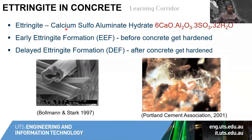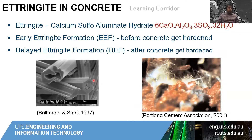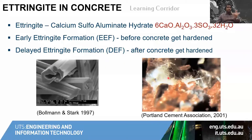Ettringite is technically calcium sulfo-aluminate hydrate and has this complex formula here. It basically appears as needle-like structures in concrete — you can see it appears like long needles. In the right picture you can see it in concrete; don't get confused with the color of the image.